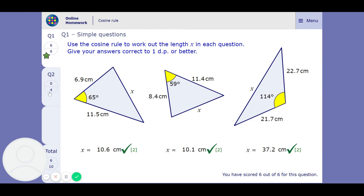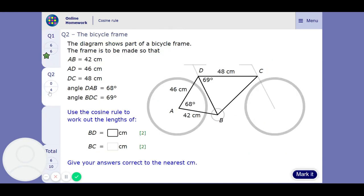We've got more right. Great, what else can they ask us? So, we've got a bicycle. The diagram shows part of a bicycle frame. The frame is to be made such that all these stuff. True.